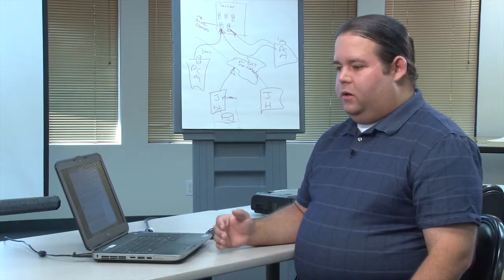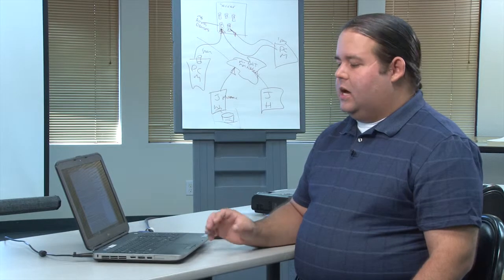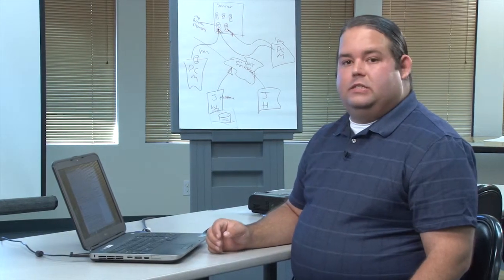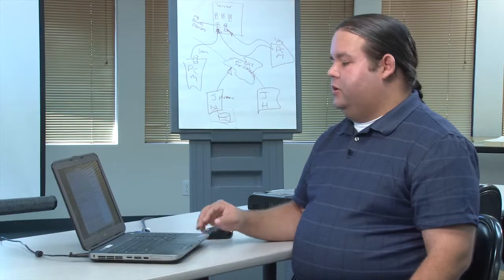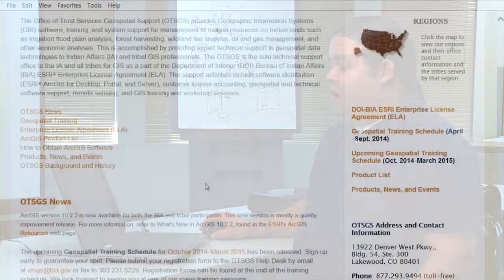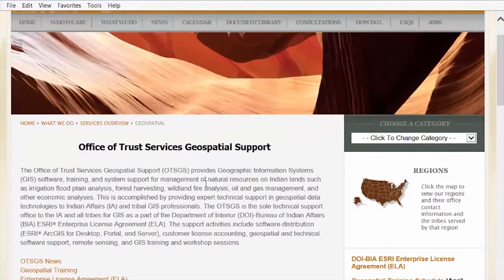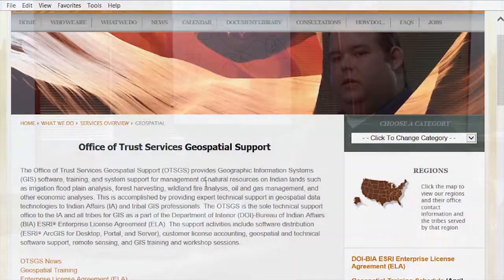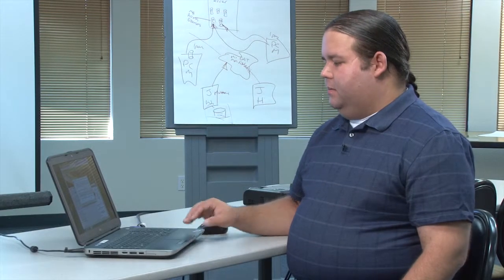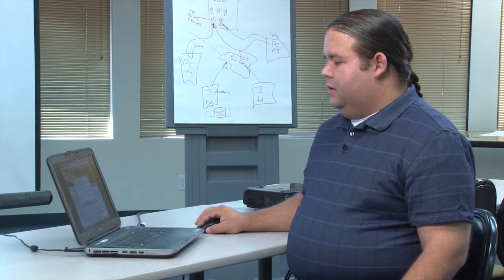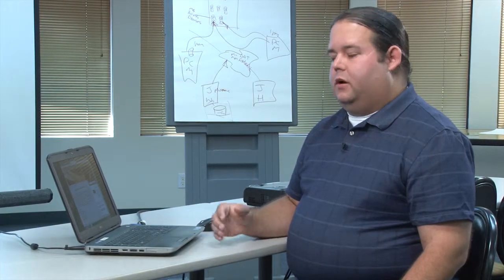When tribes are needing to get started, one of their first stops is to get the necessary software on their computers. They're able to do this through the Bureau of Indian Affairs Office of Trust Services. Through the Office of Trust Services, tribes can request the necessary software and begin the process of getting that component along with some basic training. The Office of Trust Services also provides online courses as well as in-person training, giving tribes the basic tools they need to get started.